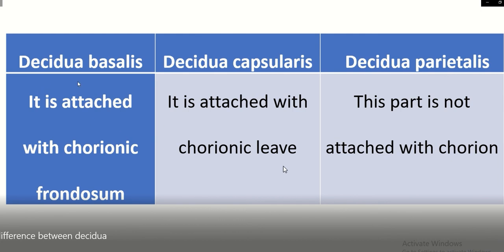Regarding the relationship with chorion: decidua basalis is attached with the chorionic frondosum — the part of the chorion where chorionic villi are well developed. Decidua capsularis is attached with the chorionic laeve — the part of the chorion where chorionic villi are not well developed. Decidua parietalis is not attached with the chorion at all.